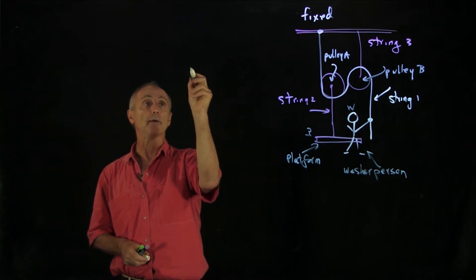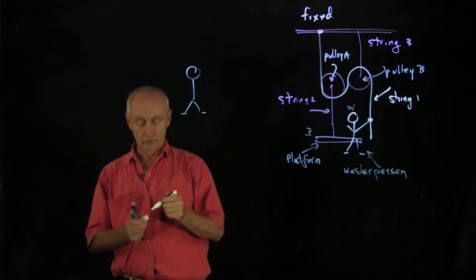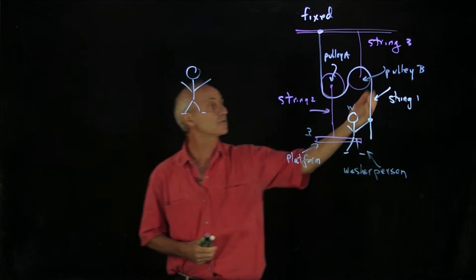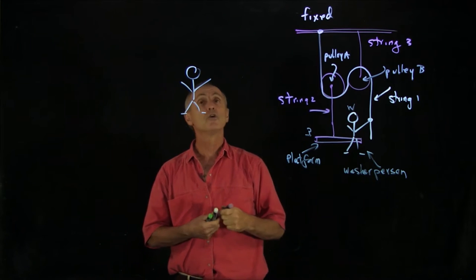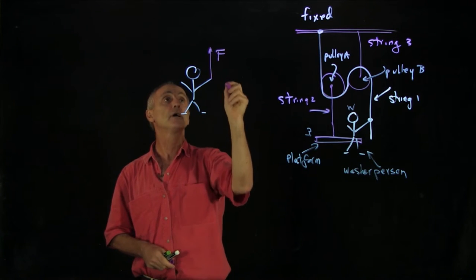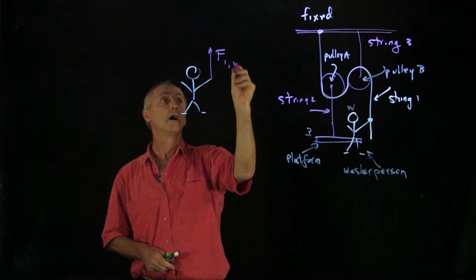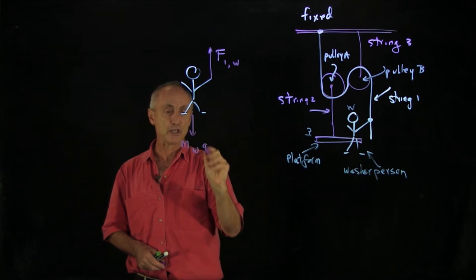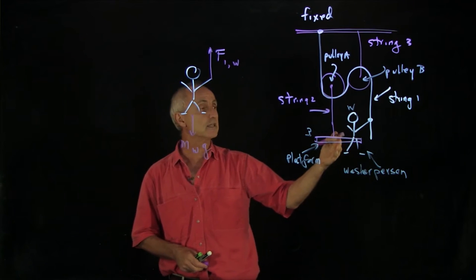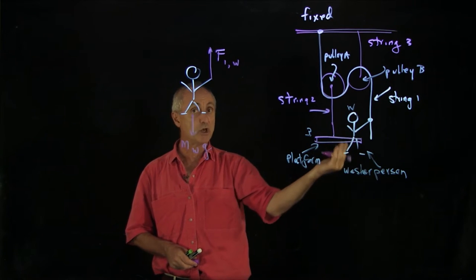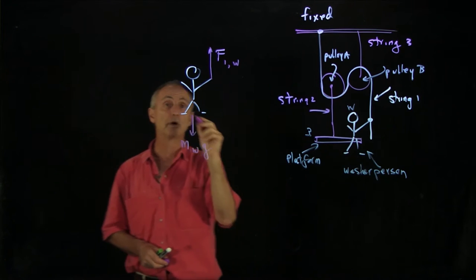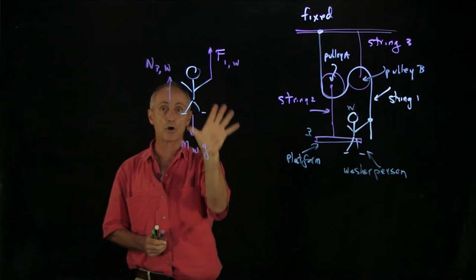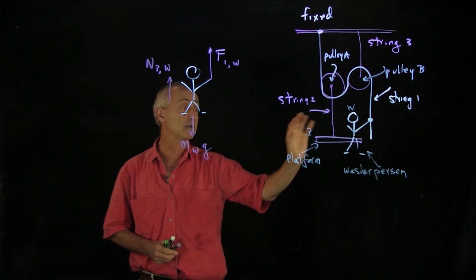Let's begin with the free body diagram on the washer. The washer is pulling the string down, so the string pulls the washer up — that's the force of string one on the washer. We also have the gravitational force, M_washer times g, and the normal force from the platform pushing the person up. Those are all the forces on the washer.